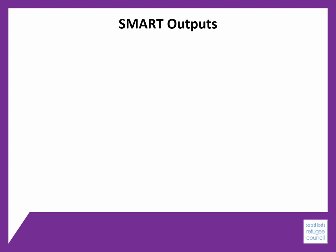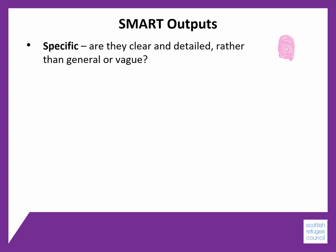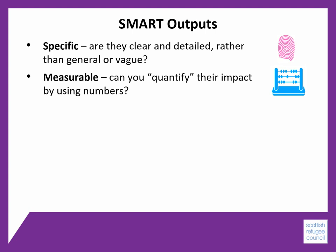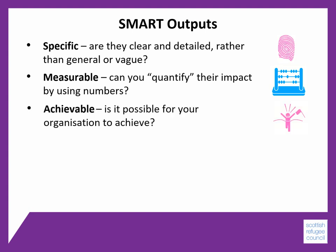So what do we mean by SMART outputs and actions? Here are some questions you can ask yourself. Are your outputs and actions specific? By which we mean, are they clear and detailed rather than general or vague? Can they be measured? Can you quantify their impact by using numbers? Are they achievable? Can you demonstrate that it's possible for your organisation to achieve the output in the way that you say?